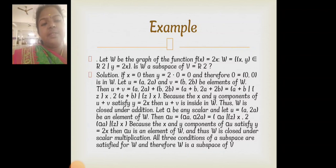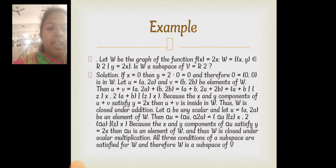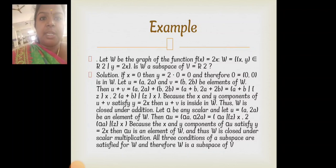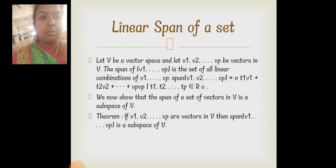Now consider any scalar alpha. Let U = (a, 2a) be an element of W. Then alpha·U = (alpha·a, alpha·2a), and since the x and y components satisfy y = 2x, alpha·U is also in W. Thus W is closed under scalar multiplication. All three conditions of a subspace are satisfied, so W is a subspace of V.